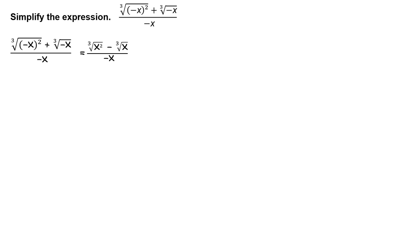Simplify. Because negative x squared equals x squared, you can write the cube root of negative x squared as the cube root of x squared. In addition, because the cube root of negative 1 equals negative 1, you can write the cube root of negative x as negative the cube root of x.